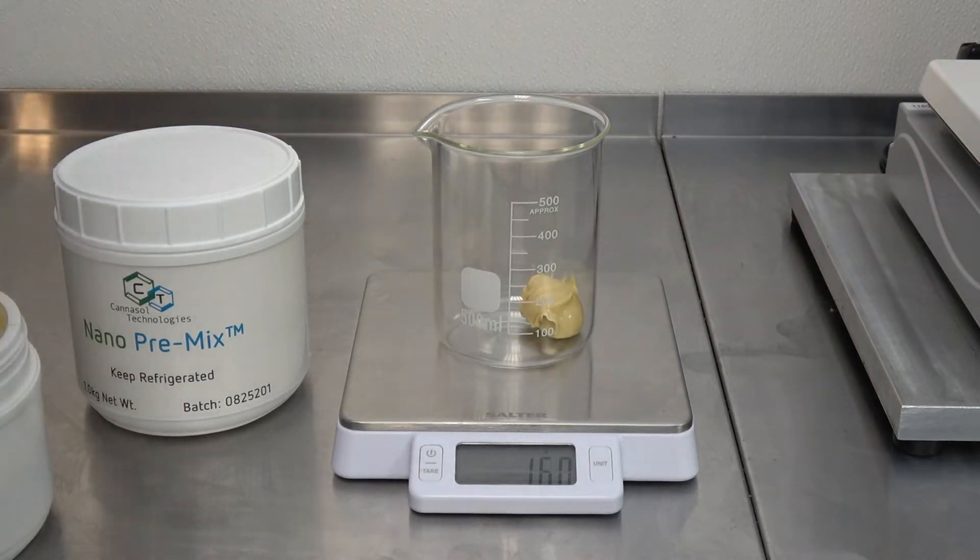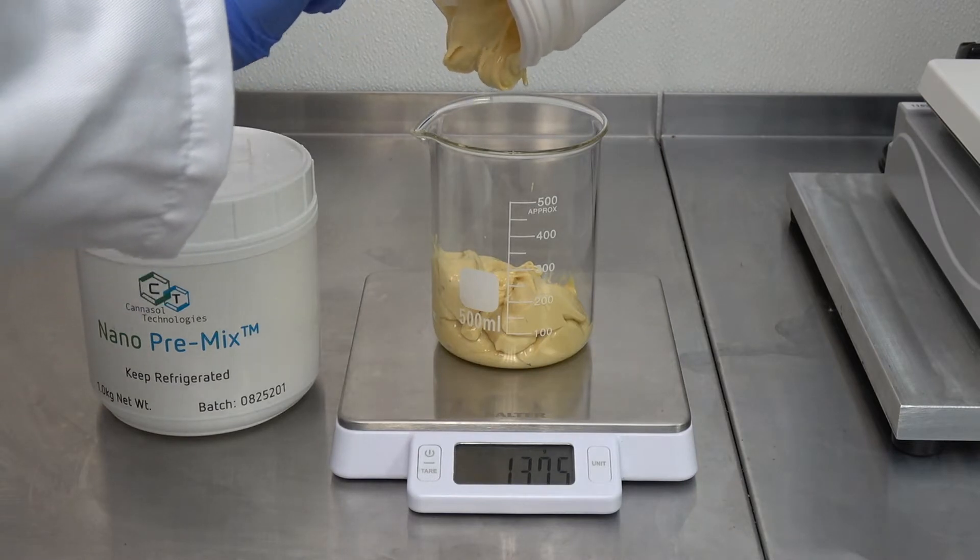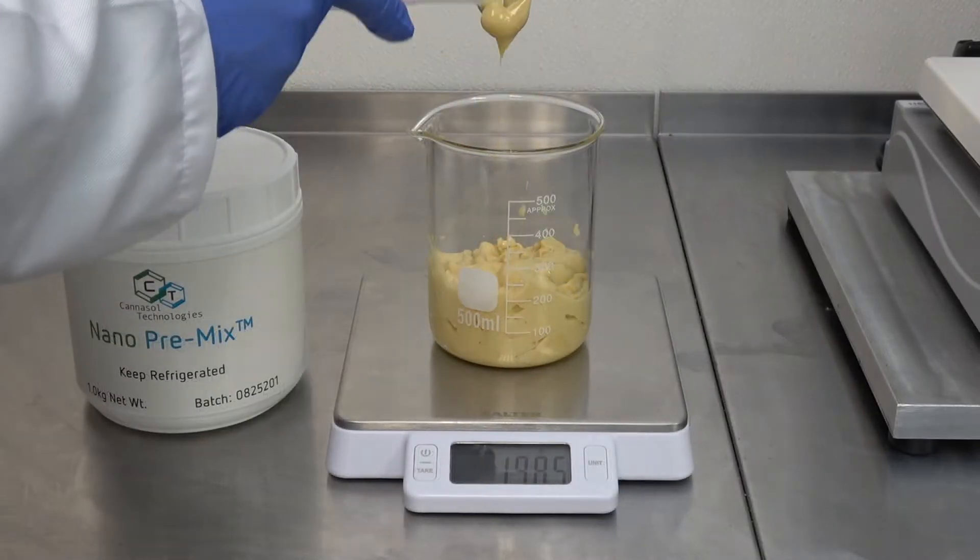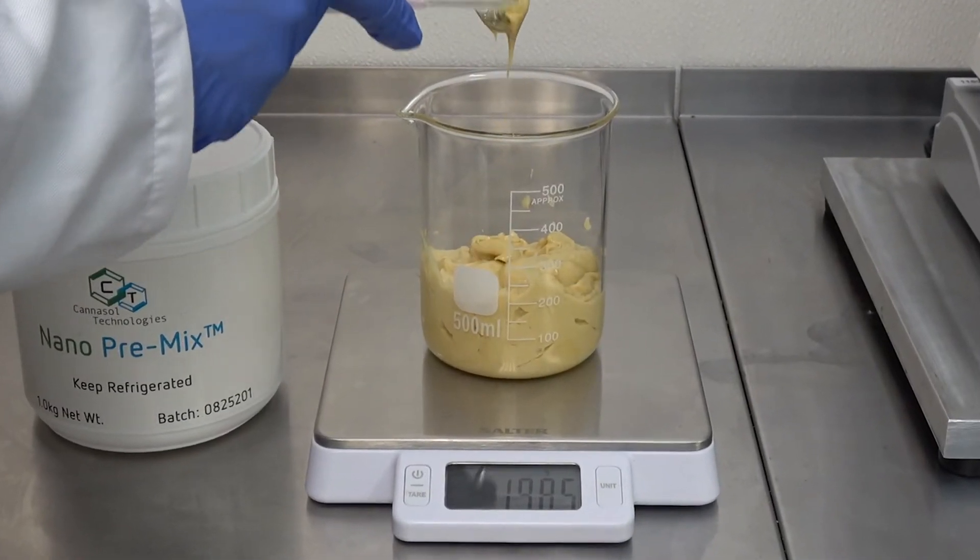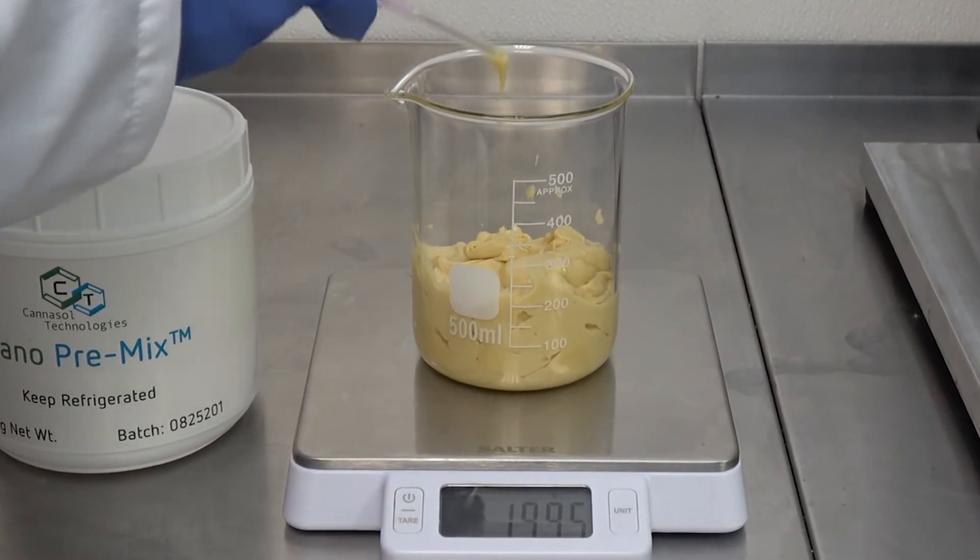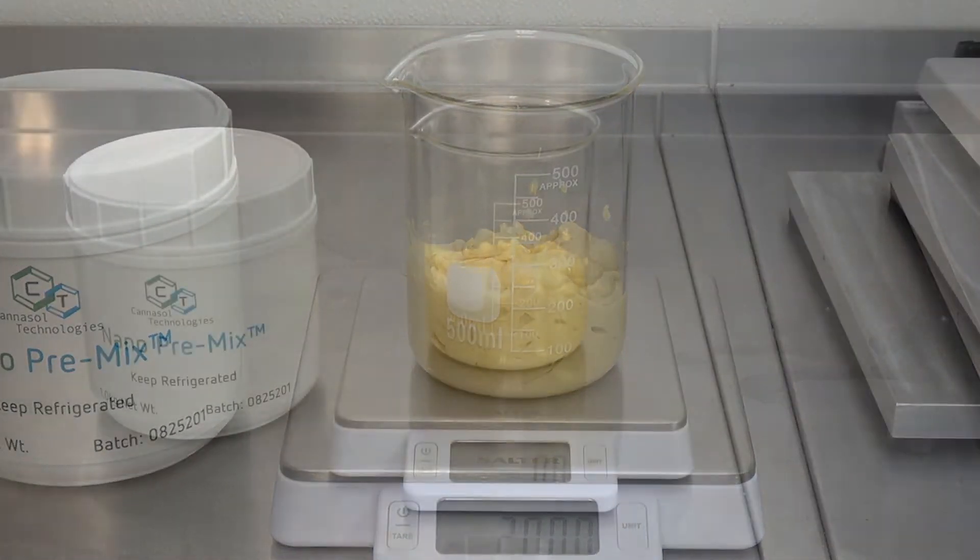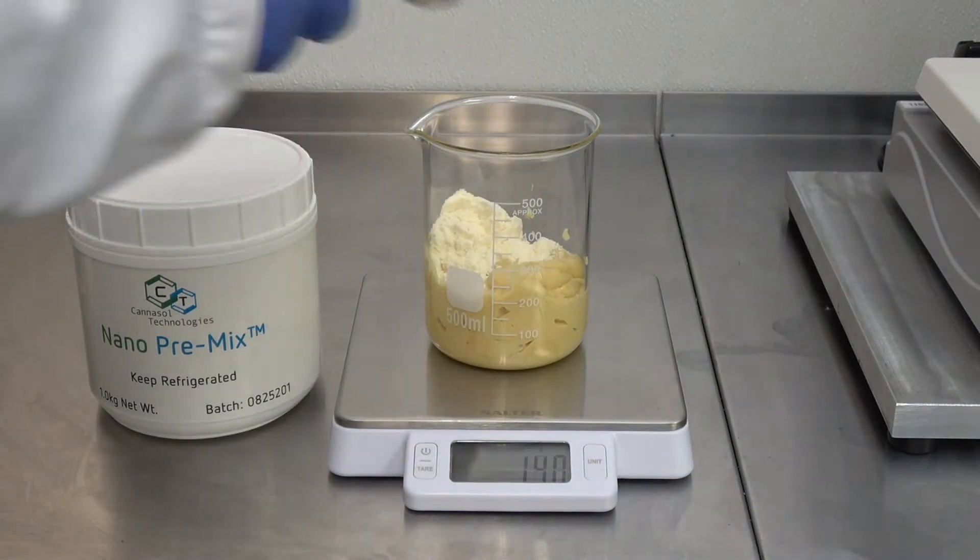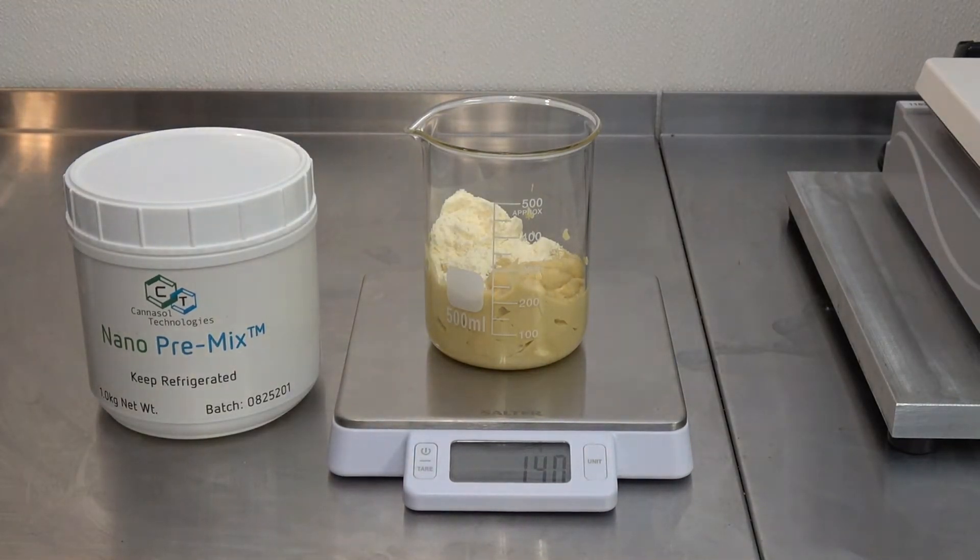To a 500ml beaker, add 4 parts nano premix, in this case, that's 200 grams, and 1 part active ingredient, in this case, 50 grams.